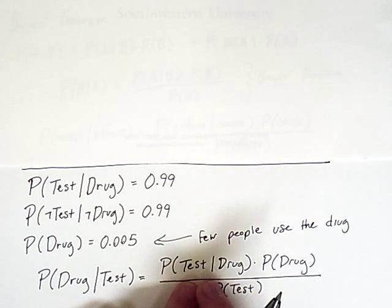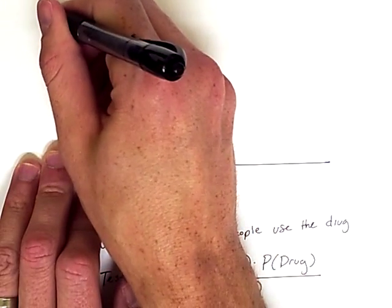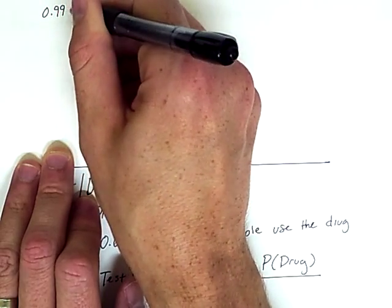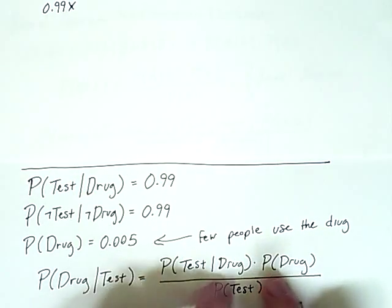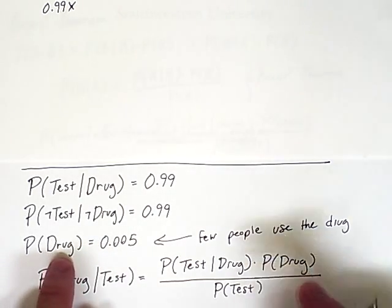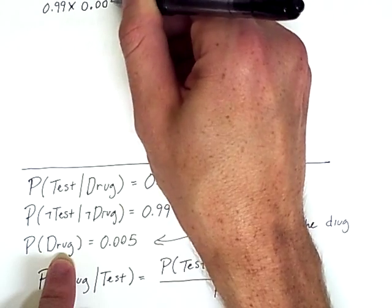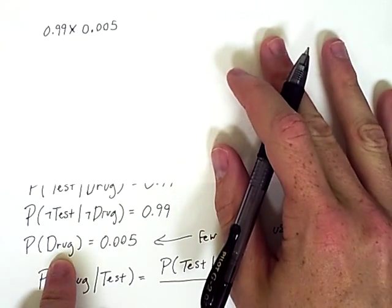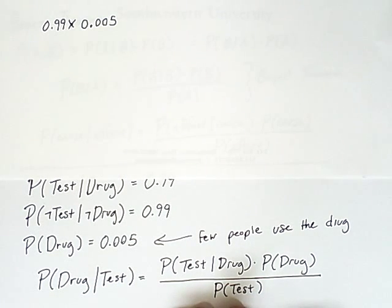So this term, the probability that the test is true given that the individual uses that drug, is right here. So we have 0.99 times the probability in general of someone using this drug. So the probability of being a user of that drug is very small, 0.005.